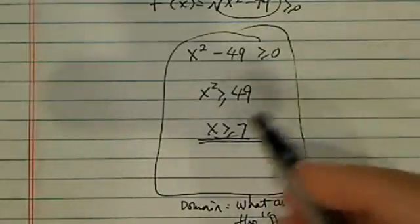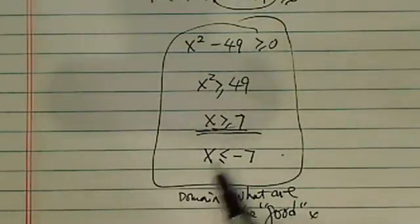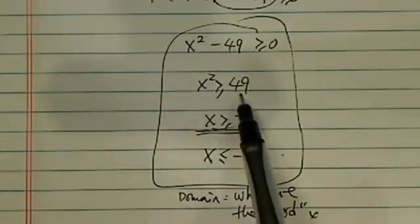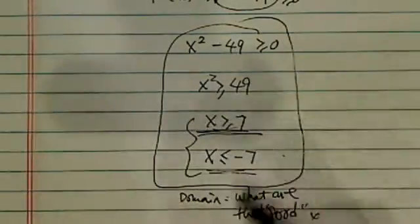There's another half. What if x is less than minus 7? That still fits. If I have minus 10, minus 10 squared is 100. 100 on this side is bigger than 49. So you want to make sure there's another half that you didn't just forget.